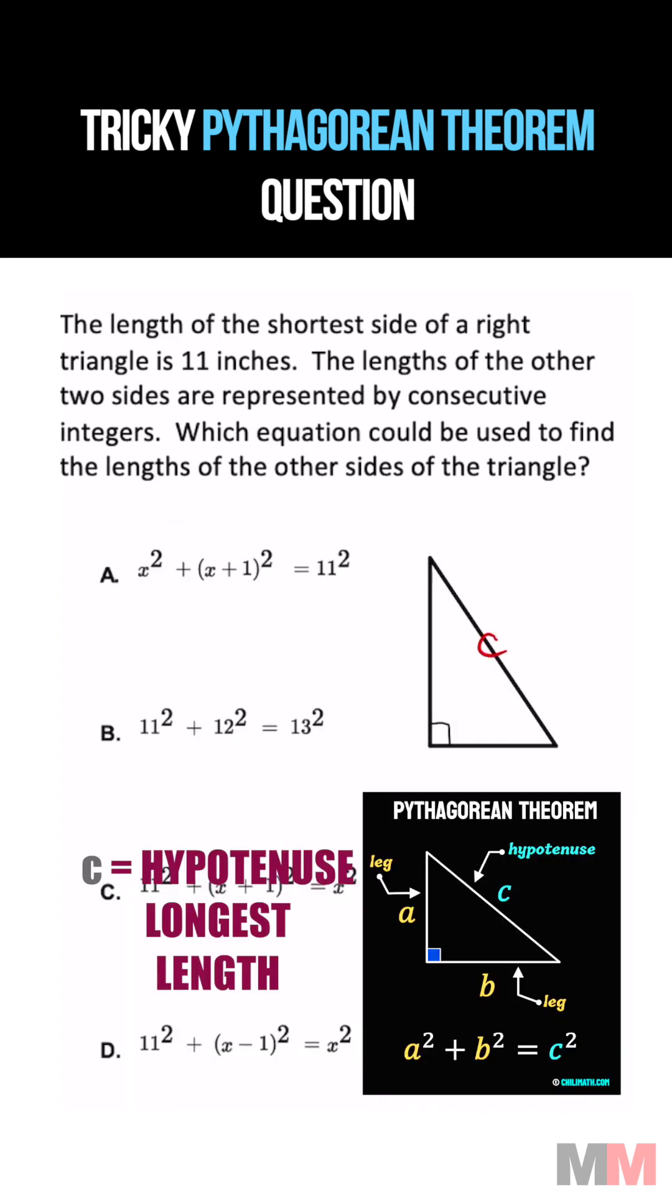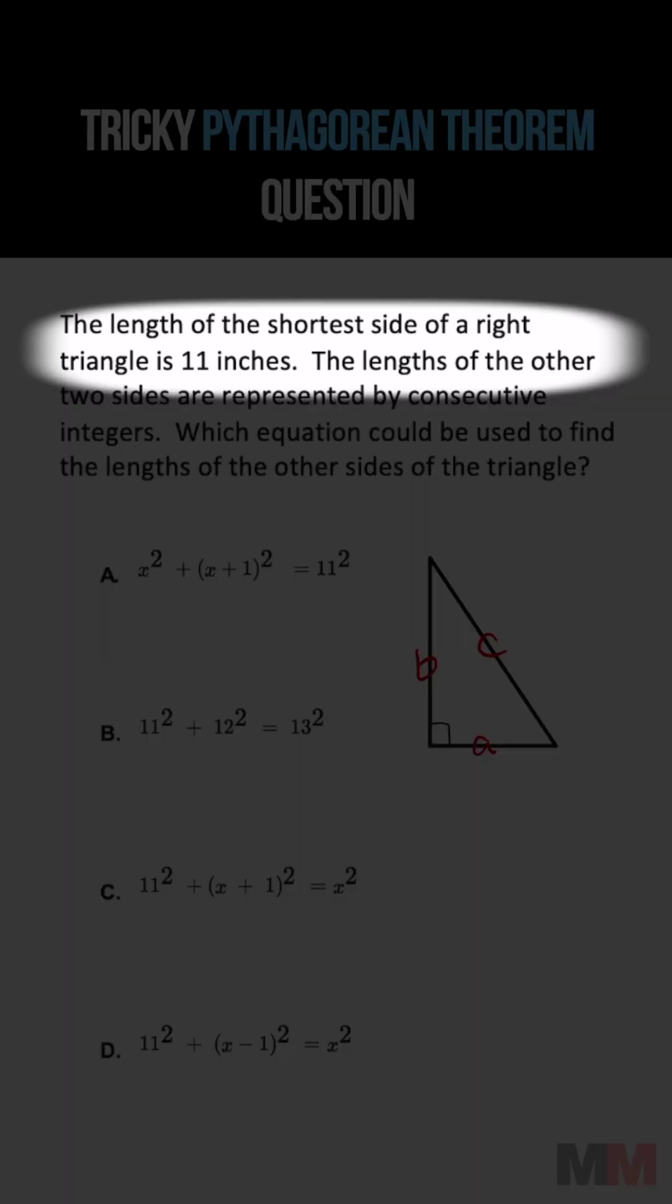C is the hypotenuse, which is always the longest length. The shortest length is 11.